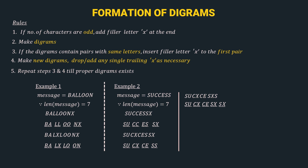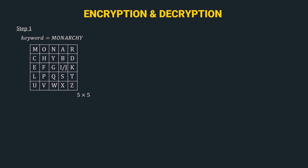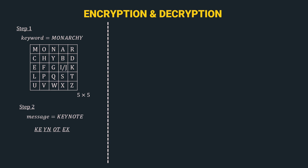Congratulations — we are done with step 1 and step 2. Finally, we have step 3: encryption and decryption. Since encryption and decryption use the matrix from step 1 and the diagrams from step 2, we will use an example. Suppose the keyword is 'monarchy', constructing the matrix from step 1, and the message is 'keynote', giving us diagrams from step 2.